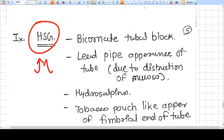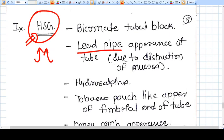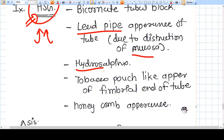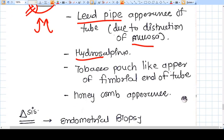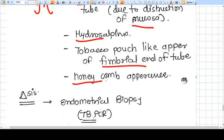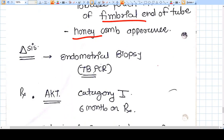Generally, with very full-blown disease on HSG, you can see bicornuate tubal block, lead pipe appearance of the tubes due to destruction of the mucosa. You may find teomas, hydrosalpinx, tobacco pouch-like appearance at the fimbrial end of tube, honeycomb appearance of the uterus, uterine cavity because of multiple adhesions in the endometrium.